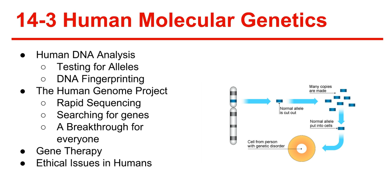Searching for genes: there are possibly as few as only 25,000 genes. To find genes, scientists need to look for promoters, which usually indicate the start of a gene.